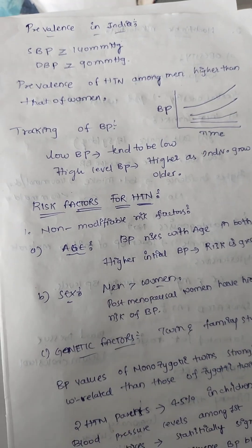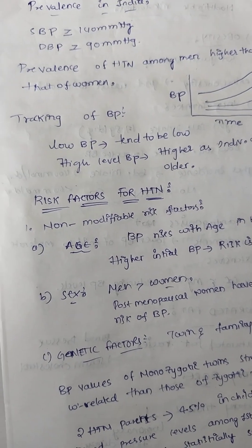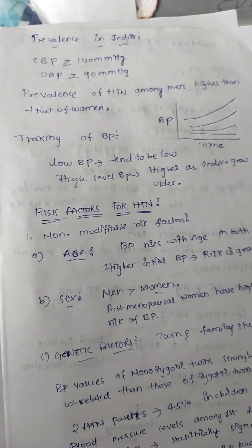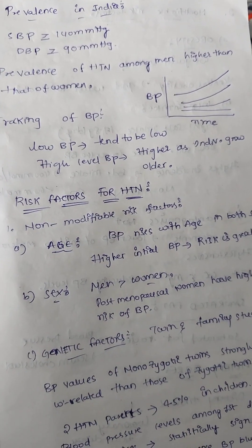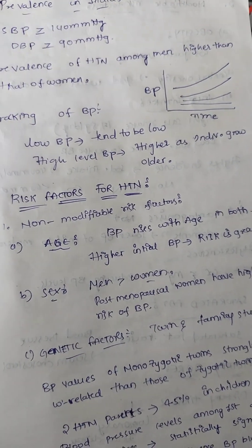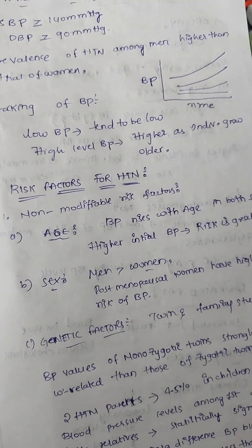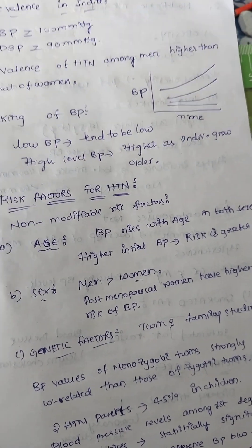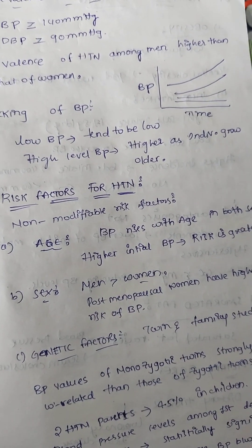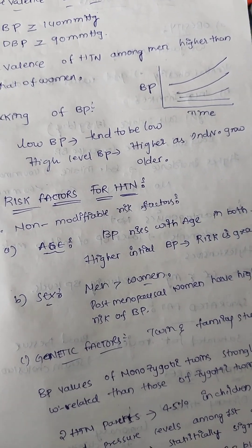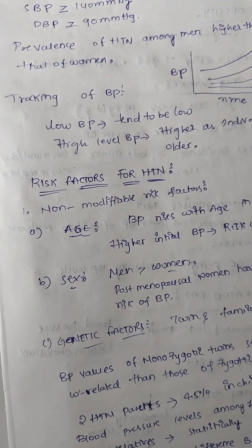Tracking of BP means that low BP tends to remain low — if you are hypotensive, you remain hypotensive. Higher blood pressure levels tend to remain higher as an individual grows older. It is on a track and will go higher only if not managed properly. This trend over time is called tracking of BP.